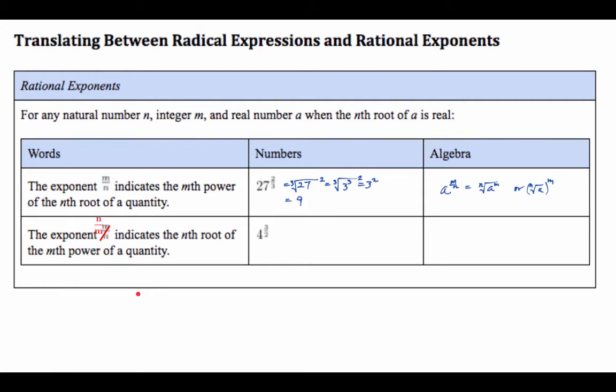So when you have 4 to the 3 half, that is equal to the square root raised to the power of 3. But what is the square root of 4? That's equal to 2, so 2 cubed is 8. And same thing with you guys. If m is in the denominator, it will be the nth root to the power of m, or nth root of a to the n.